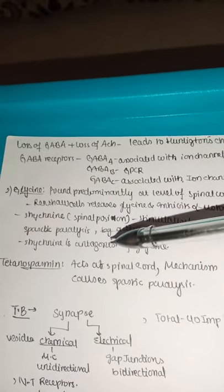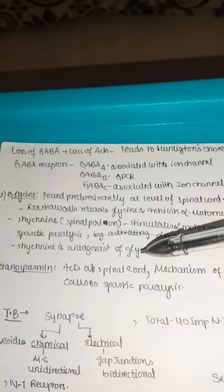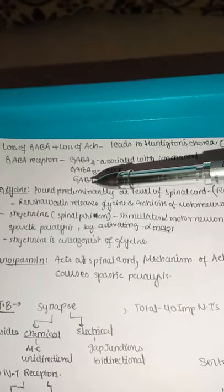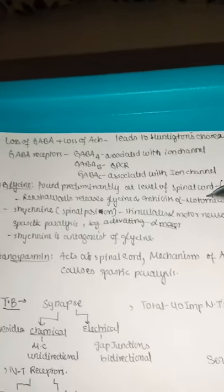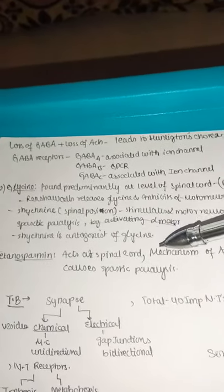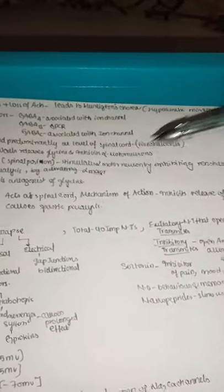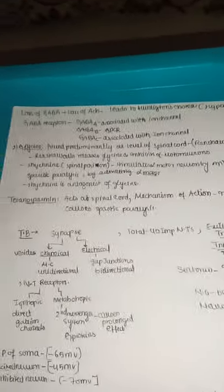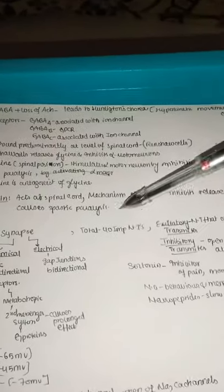Strychnine is an antagonist of glycine — glycine inhibits alpha motor neurons, but strychnine stimulates them. Tetanospasmin acts at the spinal cord and inhibits the release of both GABA and glycine, thus removing inhibition and causing spastic paralysis.